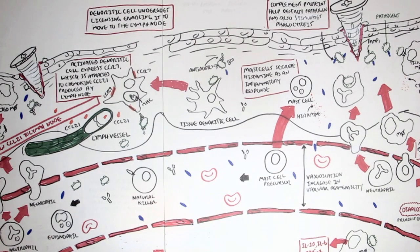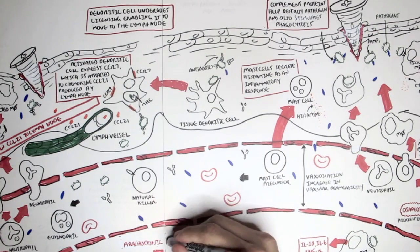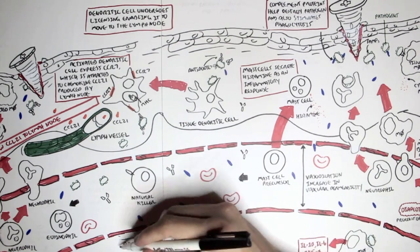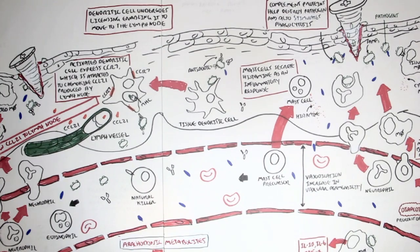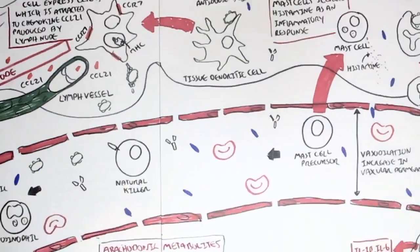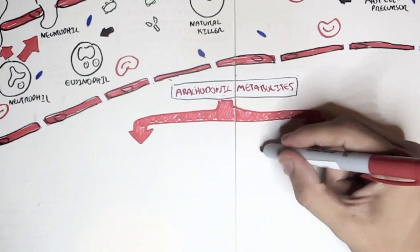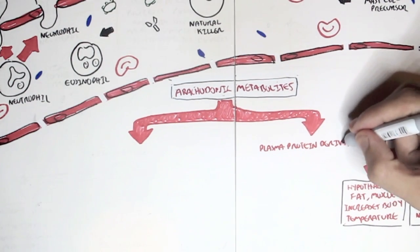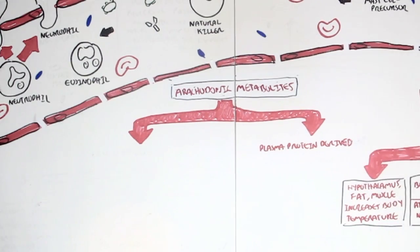So these inflammatory mediators are part of the innate immunity and also part of the adaptive immunity to an extent. So in this final part of this video, we are just going to look at some of the inflammatory mediators. So here I wrote arachidonic metabolites. This is a mistake, this should say inflammatory mediators. And there are two types of inflammatory mediators.